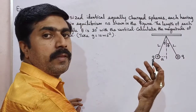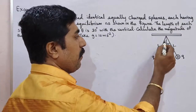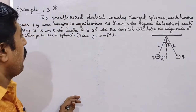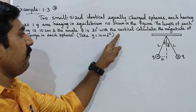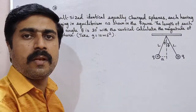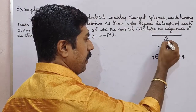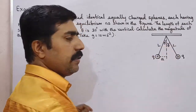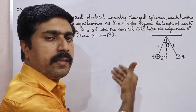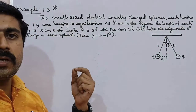This is a string. The length of the string is L. The vertical line and the string make an angle — theta is 30 degrees with the vertical line. So in the diagram, theta is 30 degrees. Calculate the magnitude of the charge in each sphere.